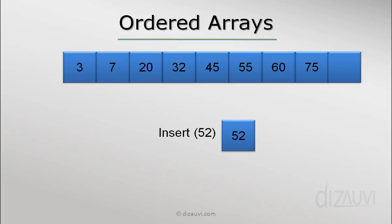So we pretty much have to start in a linear fashion starting from the left and we keep checking for items at each index until we find the one which is greater than the item to be inserted, which is 52.